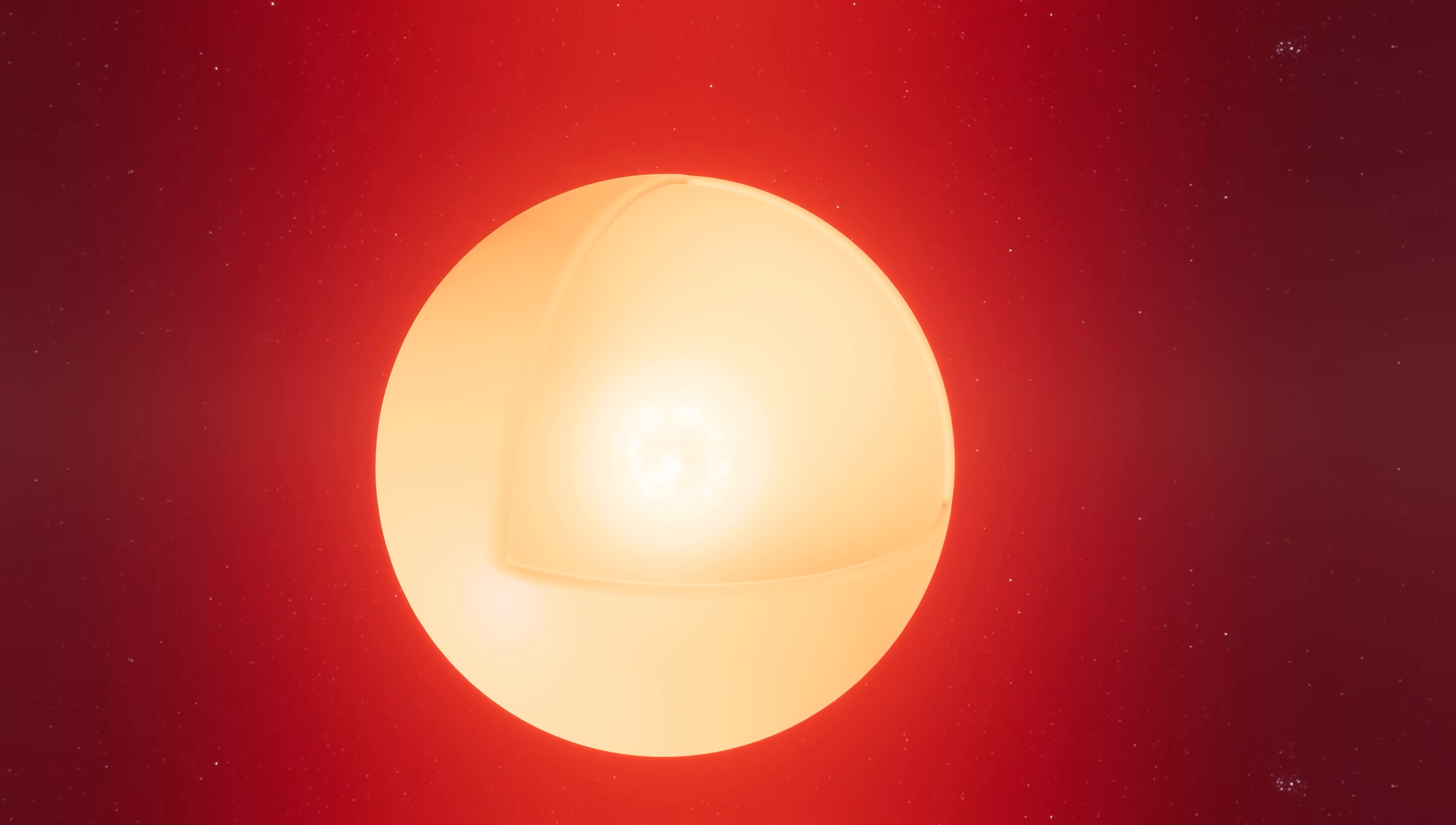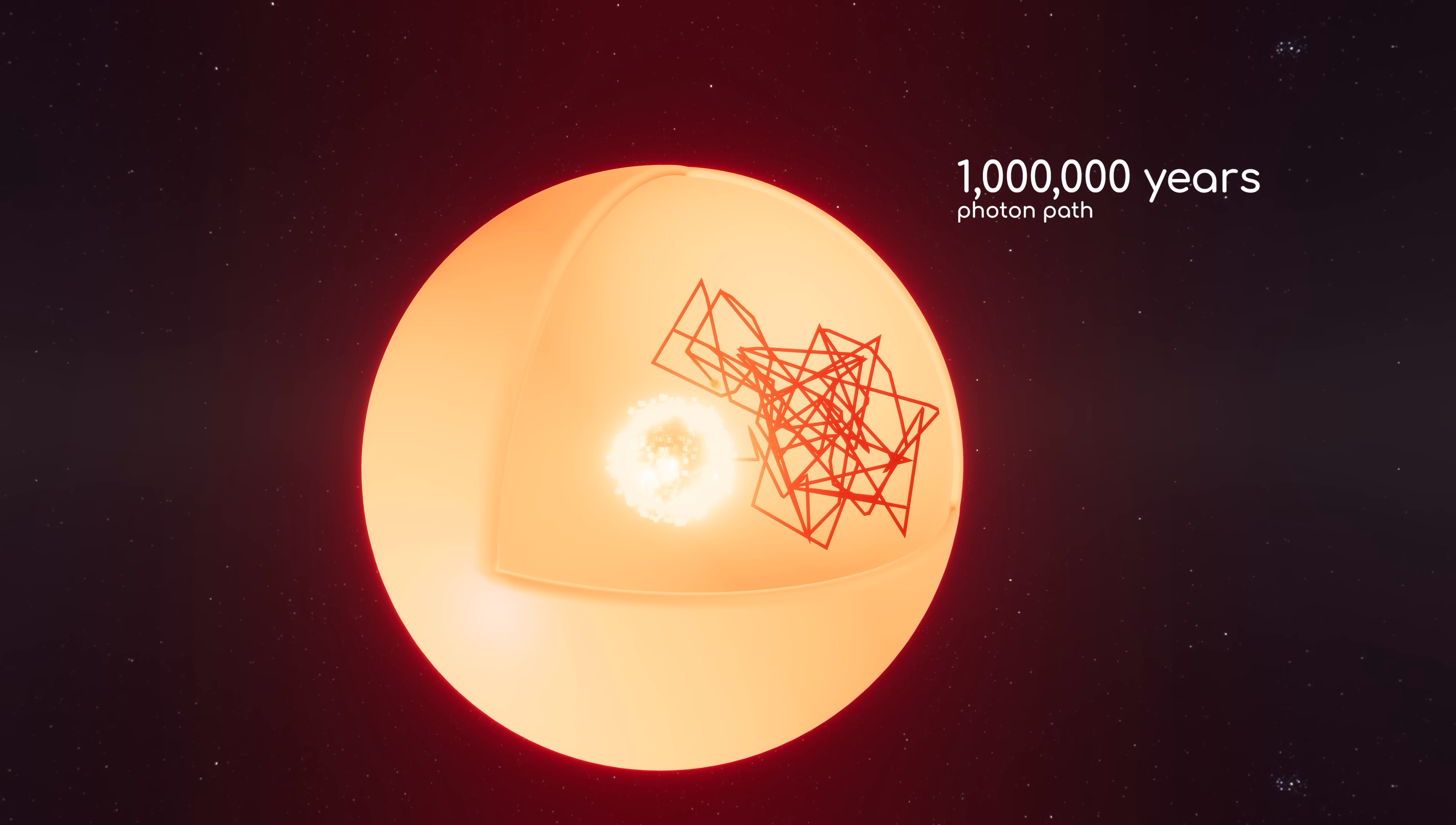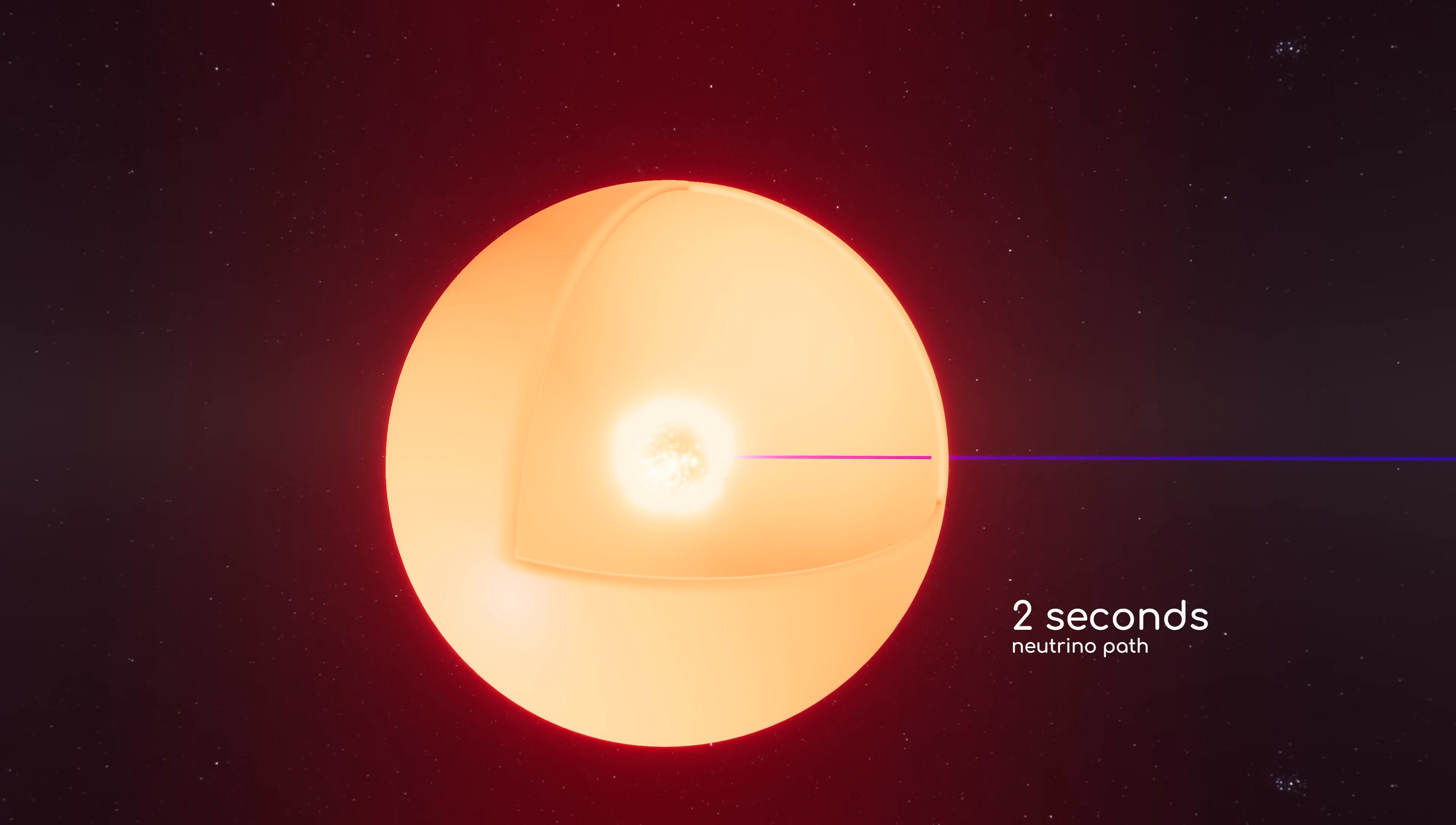Photons, created in those same nuclear reactions, may take 1 million years between bursting out of the Sun's center to leaping off the surface into space. They are constantly absorbed and emitted in random directions over and over again by the atoms in our star, resulting in a long, meandering path to escape. Neutrinos instead zoom straight out of the Sun in just 2 seconds, traveling at almost the speed of light itself.